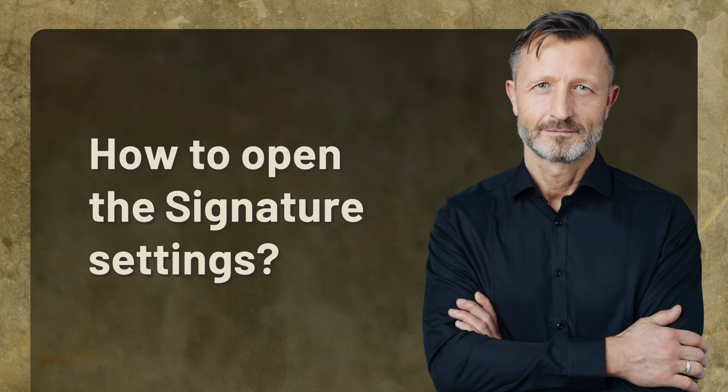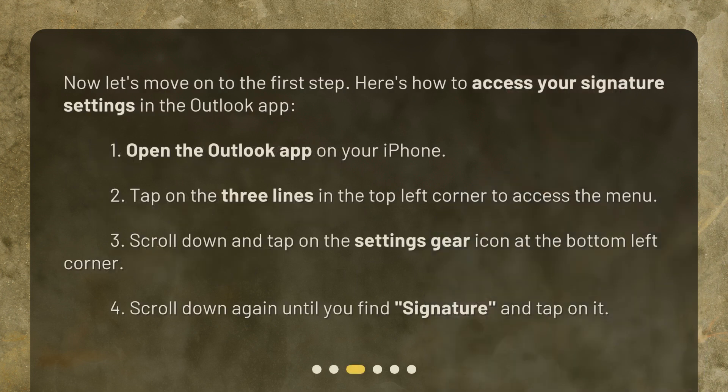How to open the signature settings. Now let's move on to the first step. Here's how to access your signature settings in the Outlook app. 1. Open the Outlook app on your iPhone. 2. Tap on the three lines in the top left corner to access the menu. 3. Scroll down and tap on the settings gear icon at the bottom left corner. 4. Scroll down again until you find 'Signature' and tap on it.